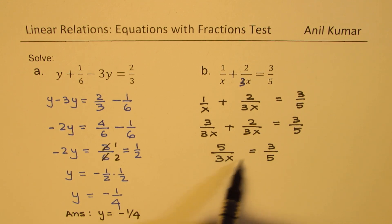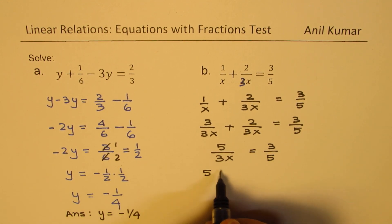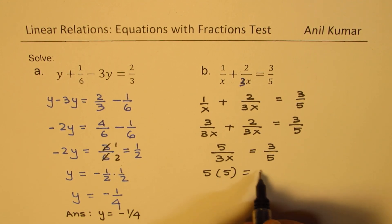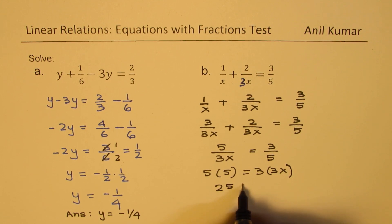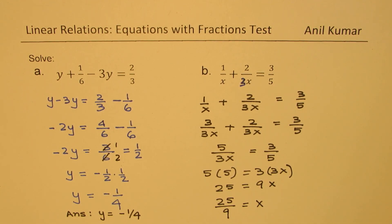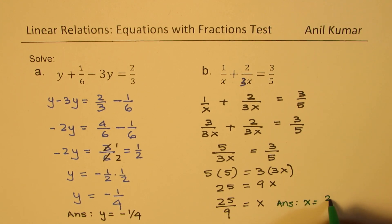Now at this stage, you can cross multiply. So we get 5 times 5 equals 3 times 3x, which is 25 equals 9x. Dividing by 9, we get 25 over 9 as the value of x. So here the solution is x equals 25 over 9.